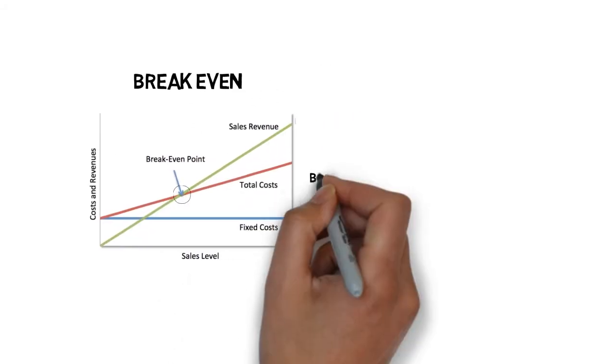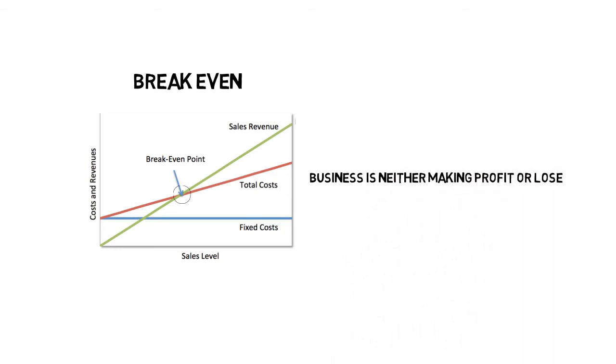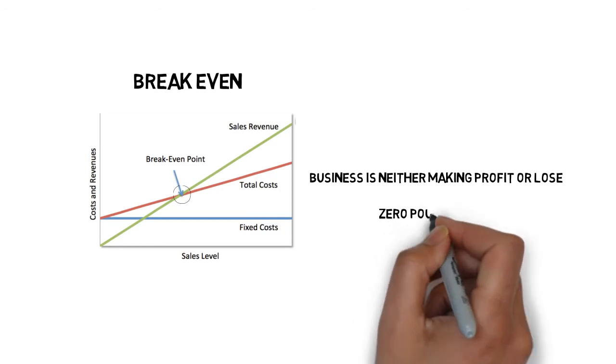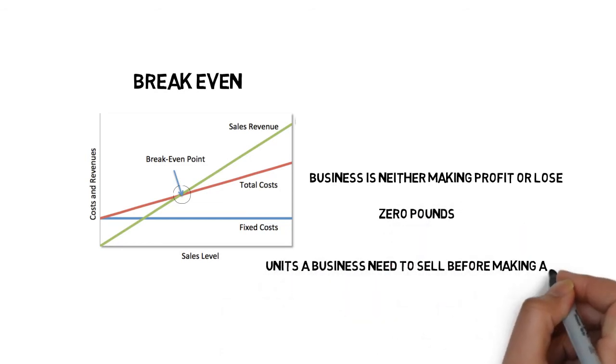This is the point where the business is neither making a profit or a loss. At break-even, the profit and loss figure will be £0. This is the number of units a business needs to sell before it's making a profit.